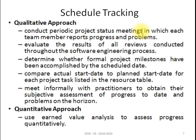In each meeting, each team member reports progress and problems they are facing. Next, we evaluate the results of all the reviews conducted throughout the software engineering process. We determine whether formal project milestones have been accomplished by the scheduled date — with the help of milestones we calculate the percentage of project completion. We also compare the actual start date to the planned start date for each project task listed in the resource table.